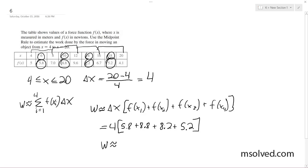So if we add these together and multiply it times 4, we get approximately 112 joules. And that's a pretty good estimation. All right, that's how you do that.